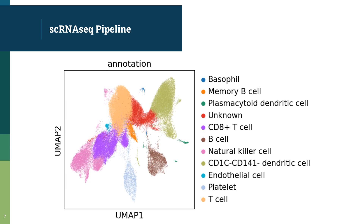Running the previous pipeline over our dataset, composed for now of 9 newly RA diagnosed patients and 9 matching controls, we obtain this graph. In this UMAP, each point represents a cell and its position represents its global expression profile relative to the other cells, such that cells sharing a similar expression profile are closer in the UMAP. Running the pipeline, we obtain 11 annotated clusters of immune cell types.